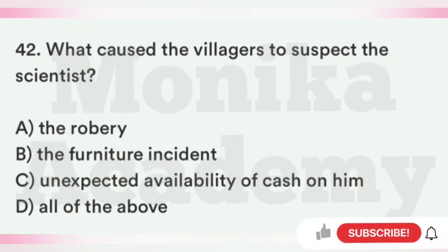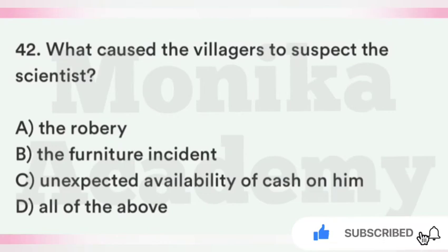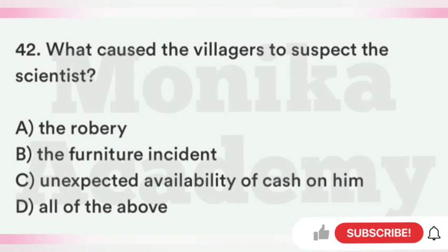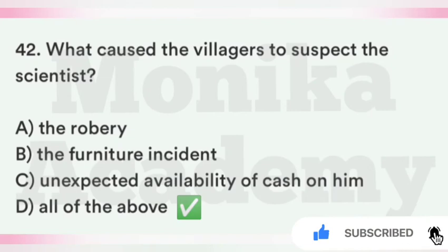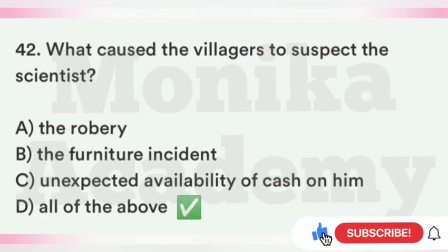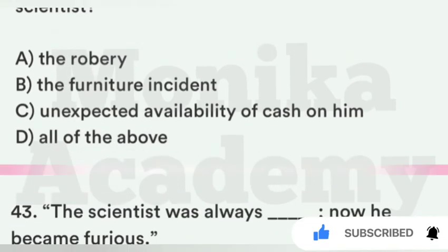Question 42: What caused the villagers to suspect the scientist? Option A: The robbery at the clergyman's house. Option B: The furniture incident at Mrs. Hall's. Option C: Unexpected availability of cash on him — पहले Griffin कह रहा था उसके पास cash नहीं है, फिर अचानक cash उपलब्ध हो गया. Option D: All of the above. The correct answer is D, all of the above — यही तीनों घटनाएँ थीं जिसके कारण villagers को Griffin पर शक हुआ.